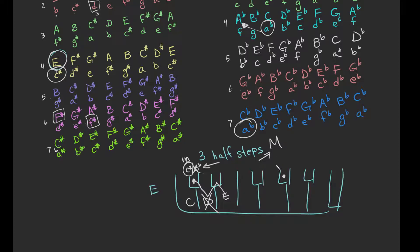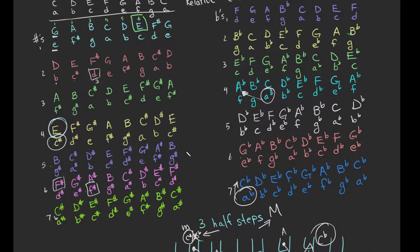Let's go the opposite way using A flat. We go up three half steps to find its relative major — one, two, three — we get to B. But A and B are right next to each other, so we can't use B; we have to use the letter C. That note is C flat, so the relative major for A flat minor is C flat major.